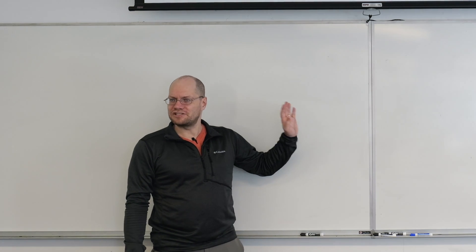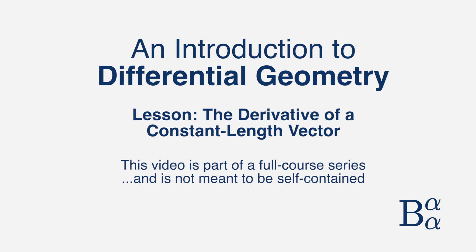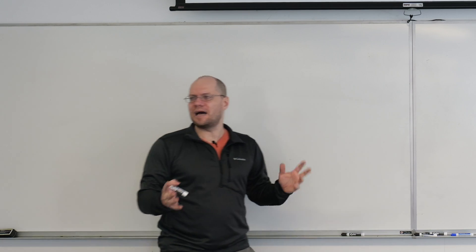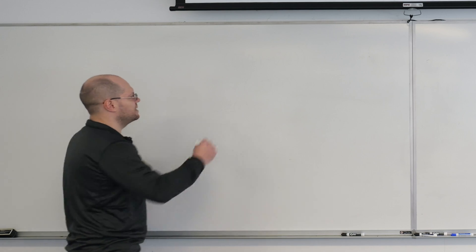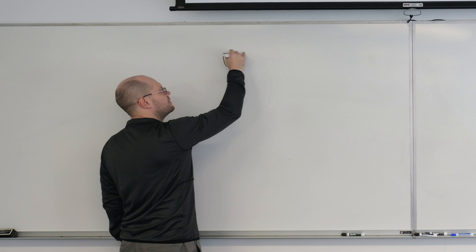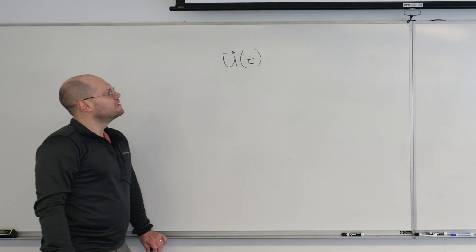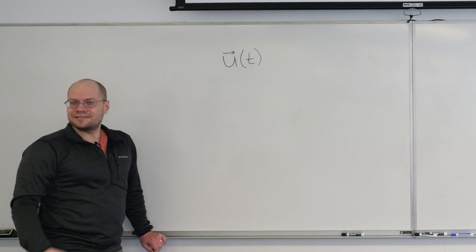Here is the first application of differentiation of vector-valued functions. Can you really call it an application? It's not really an application, it's an observation. But it will be very insightful, even in a lot of real-life situations. So here's the statement, the observation, that if we have a function u of t, and it's constant length.